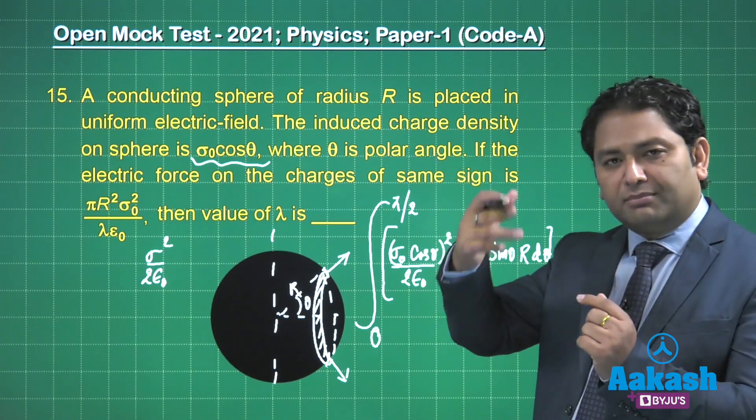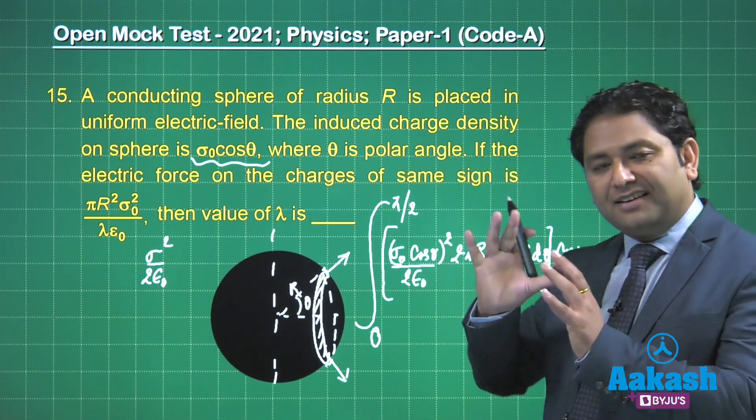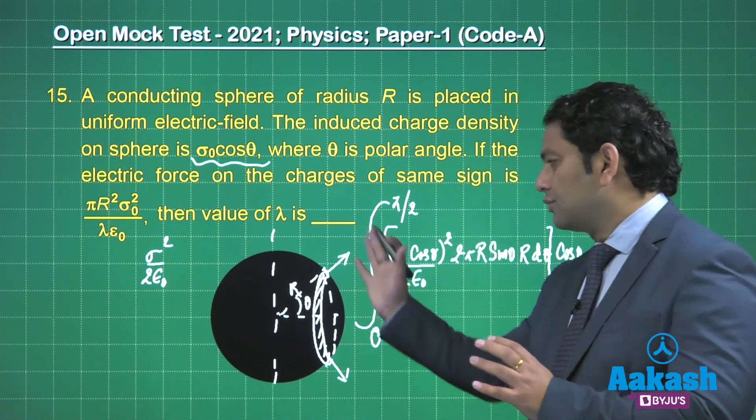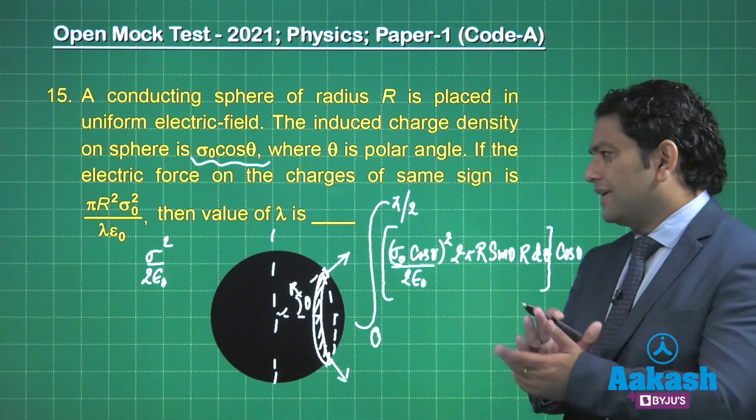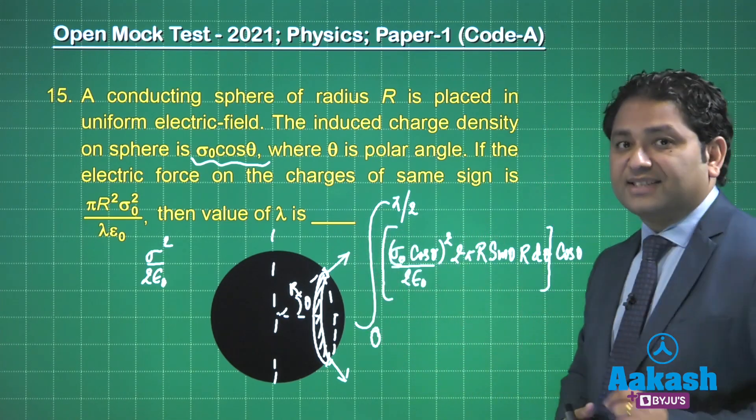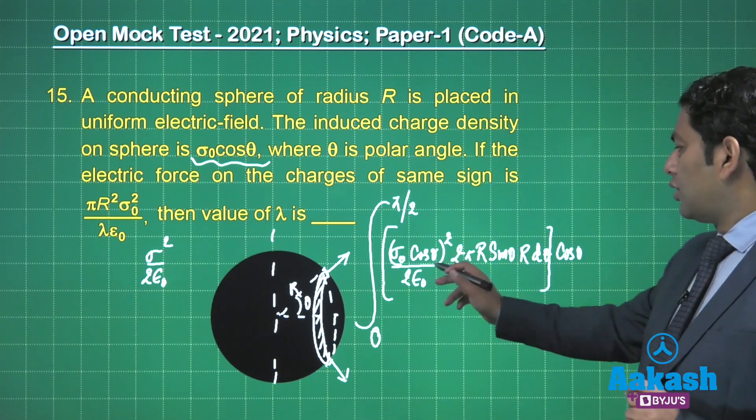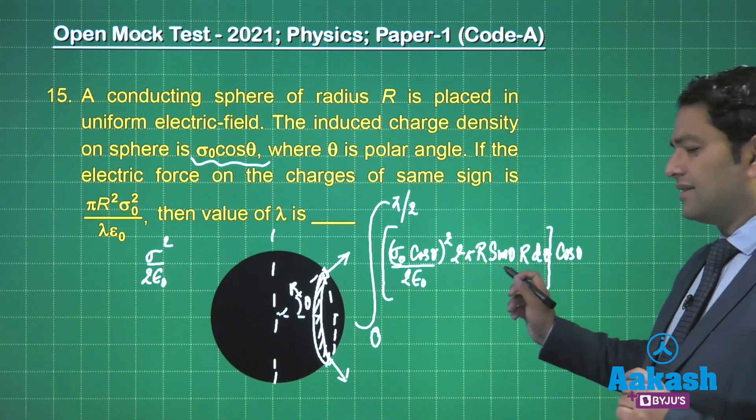A cap would be formed and the hemisphere would be there from 0 to π/2. Solving this should not be a trouble at this stage because cos³θsinθ is a simple thing you can integrate by substitution.